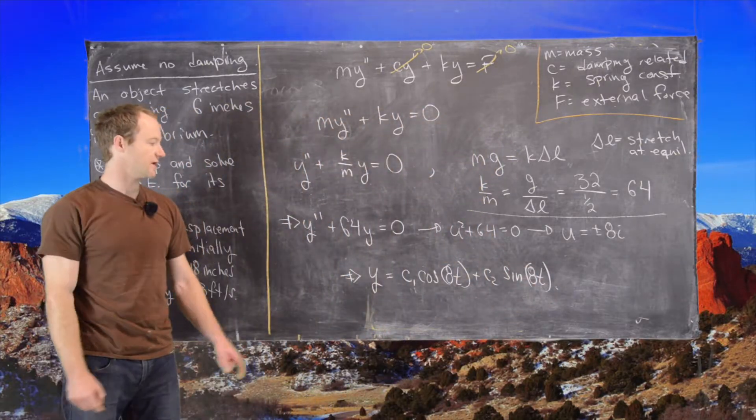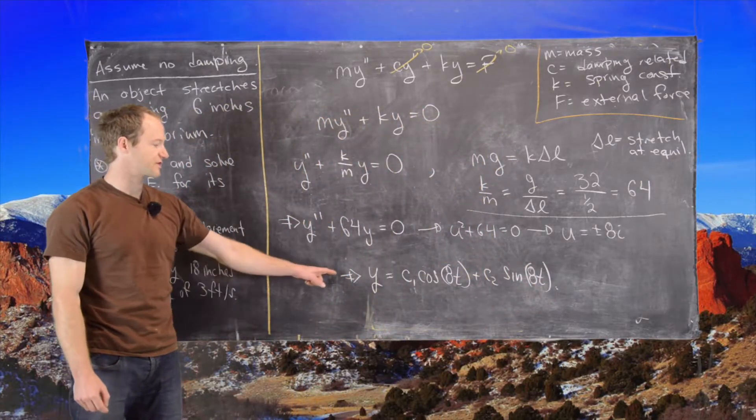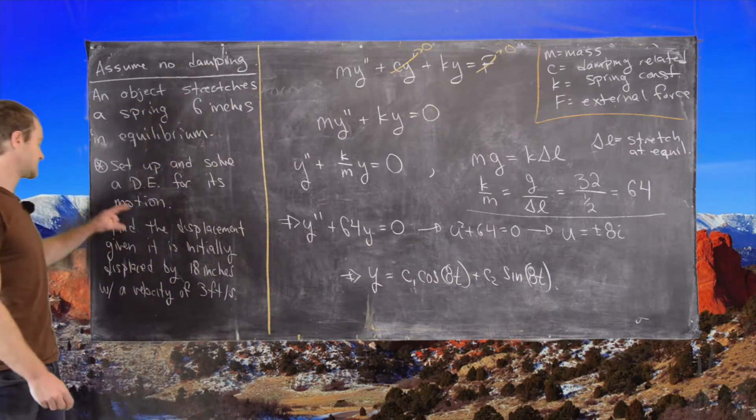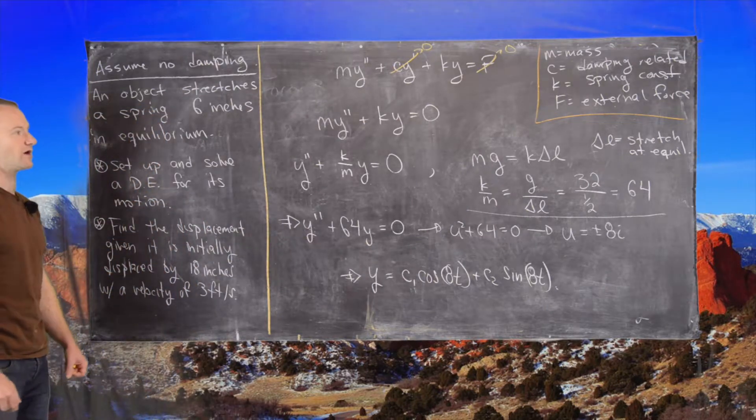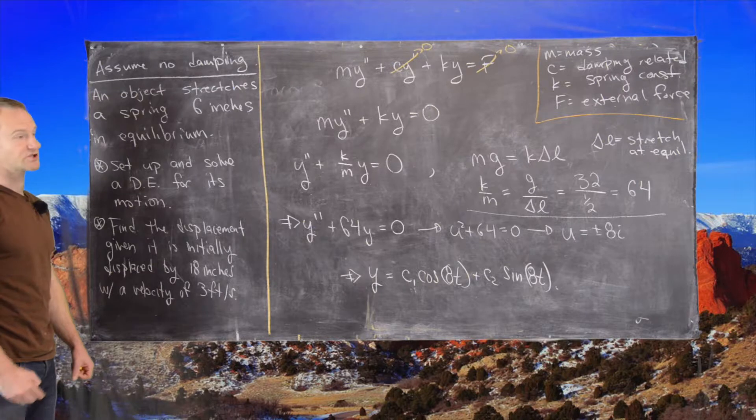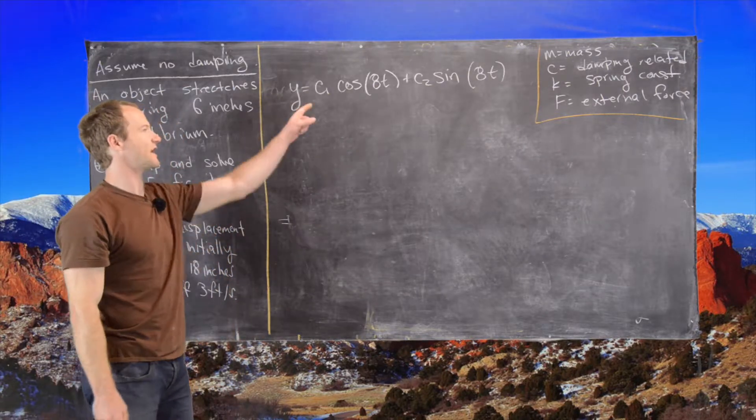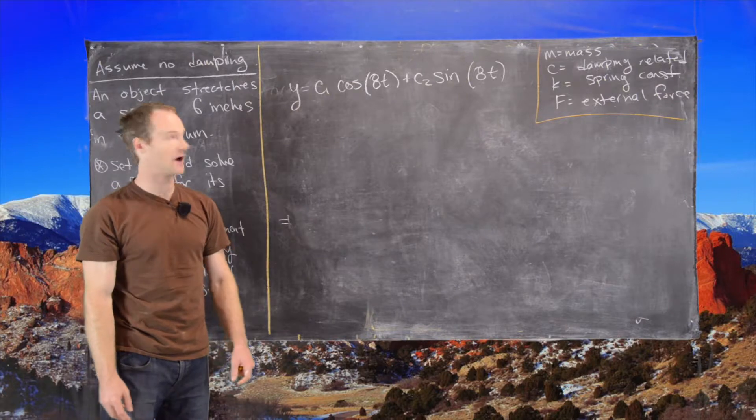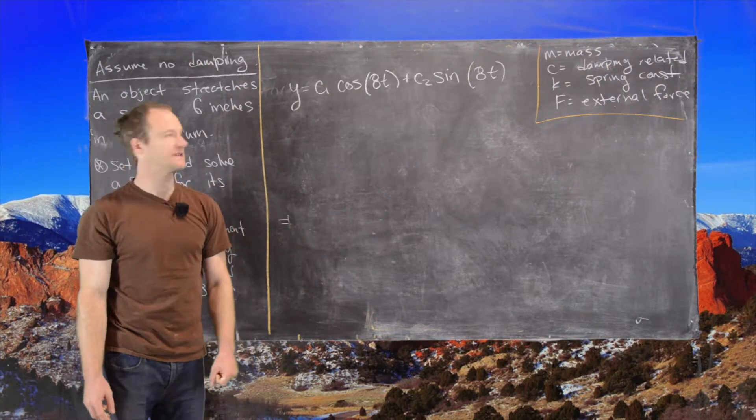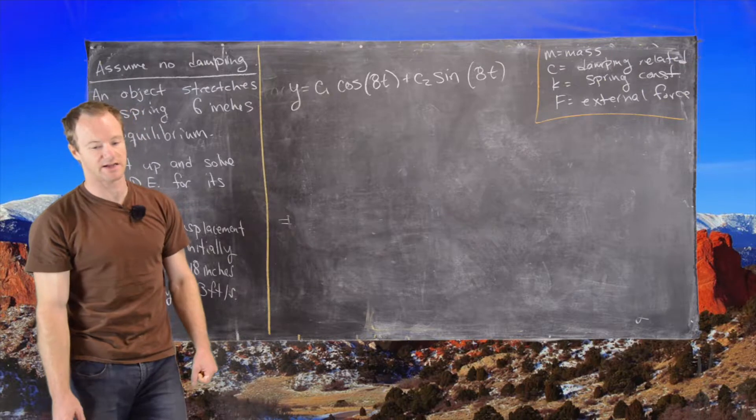Okay. Good. So I'll clean up the board, then we'll start from here, and we'll see what we can get out of this second part of the question. So we've solved the homogeneous differential equation and got that our general setup is given by the following. So we have some constant times cosine 8t and some constant times sine 8t.